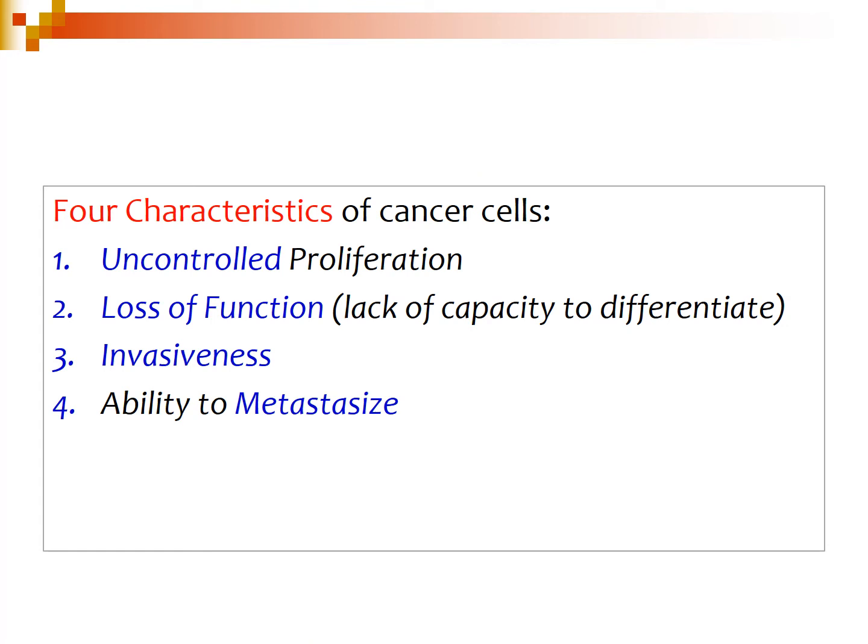There are four characteristics of cancer cells. Number one: uncontrolled proliferation or multiplication. Second: loss of function, because these cells are abnormal and lack the capacity to differentiate normally. Third: invasiveness — cancer can invade into the surrounding tissue. Fourth: the ability to metastasize to distant sites; for example, a cancer may originate in the bone but spread to the brain.